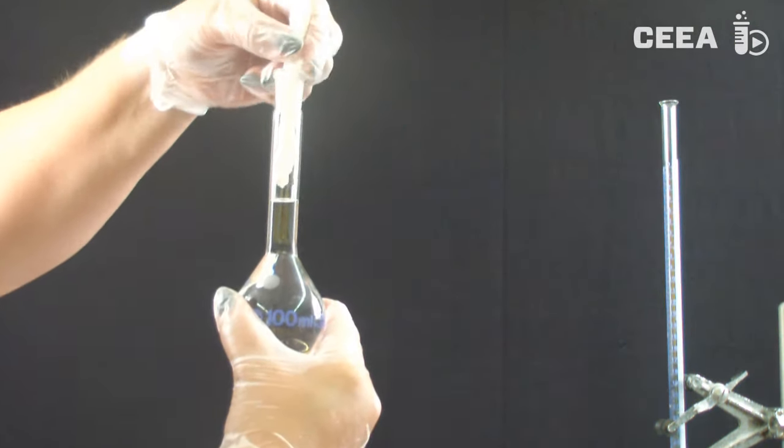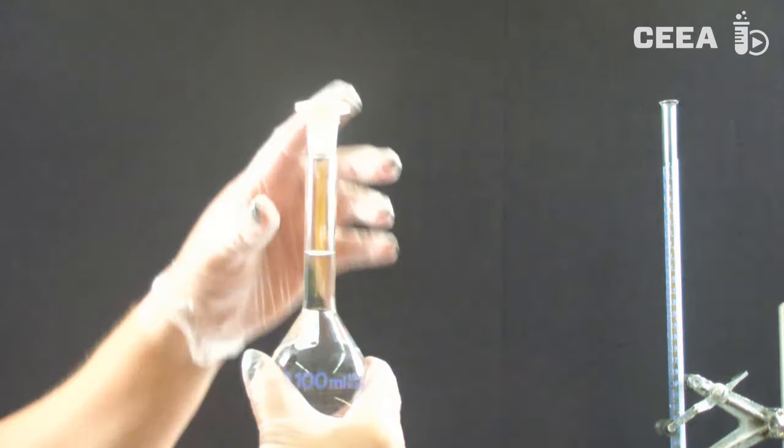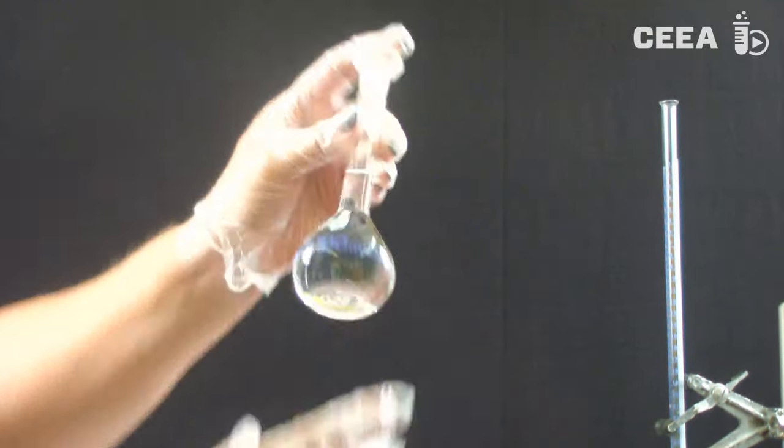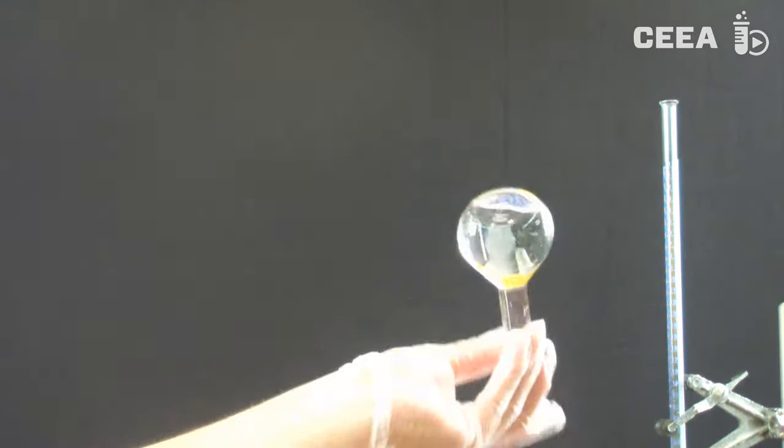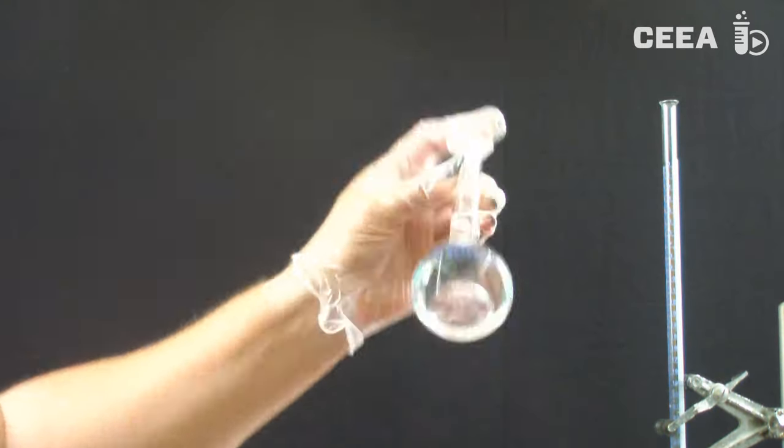Dry the inside of the top of the volumetric flask with filter paper, and next, swirl gently at least 10 times to homogenize the sample.